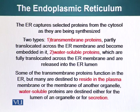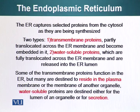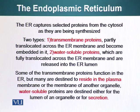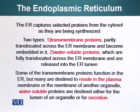From the ER lumen, proteins bud into vesicles, and after several exchanges, those vesicles fuse with the plasma membrane, releasing the contents. Some transmembrane proteins function in the ER, but many are destined for the plasma membrane — such as the receptors we have discussed — or membranes of other organelles. Water-soluble proteins are destined either for the lumen of an organelle or for secretion, such as antibodies, which are secreted through the ER–Golgi apparatus route.